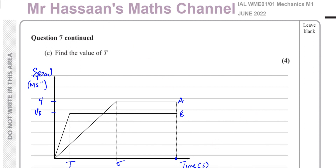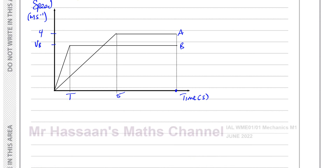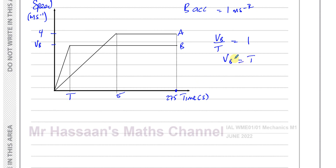For Part C, we need to find the value of T. We know the total race time is 27.5 seconds. Beth's acceleration is 1 m/s², so the gradient of her speed-time graph gives VB / T = 1, meaning VB = T — the numerical value of her maximum speed equals T.